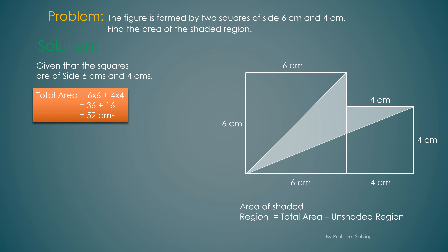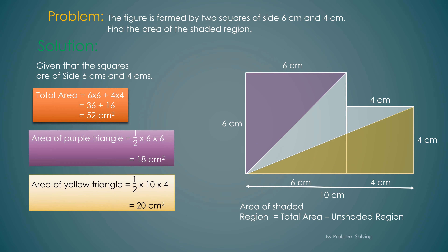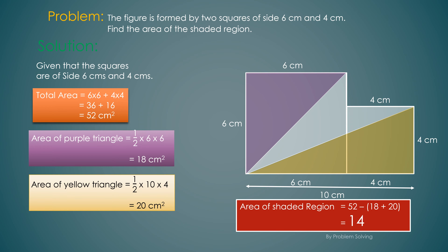We know that the area of a triangle is half of the height times the base. The area of the purple triangle is half of 6 times 6, which is 18 centimeters squared. The area of the yellow triangle — since the whole base is 10 centimeters — is half of 10 times 4, which is 20 centimeters squared.